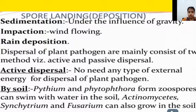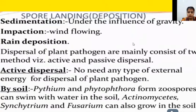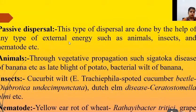In active dispersal, there is no involvement of any external agency for spreading of plant pathogens. This occurs mainly in the soil and seed, where no mechanical or external agency is needed. For example, in soil, Pythium and Phytophthora form zoospores that can swim with water and get into the soil. Similarly, Actinomycetes, Synchytrium, and Fusarium can also grow well in the soil. These are examples of active dispersal.